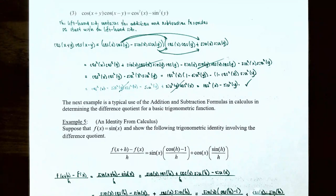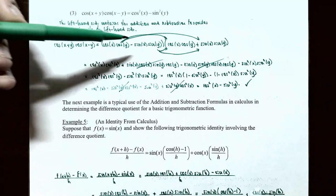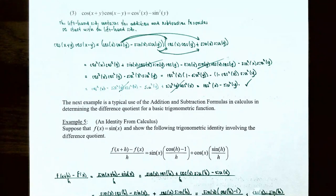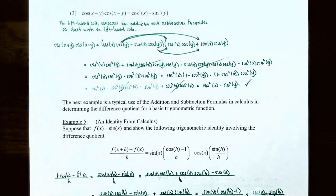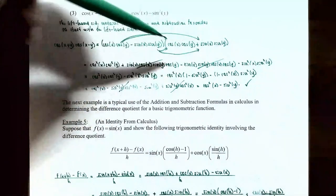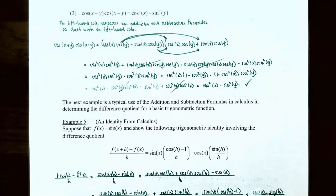The left-hand side contains the addition and subtraction formulas for the cosine function, so we'll start there. Cosine of x plus y, using the addition formula, is cosine of x cosine of y subtract sine of x times sine of y. Then cosine of x subtract y, using the difference formula, is cosine of x cosine of y plus sine of x sine of y. We now have a binomial times a binomial and can use the FOIL method.